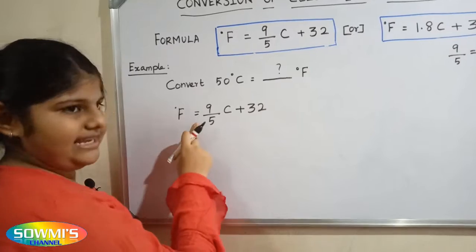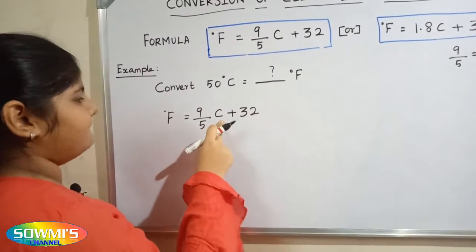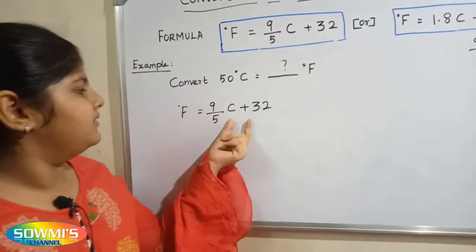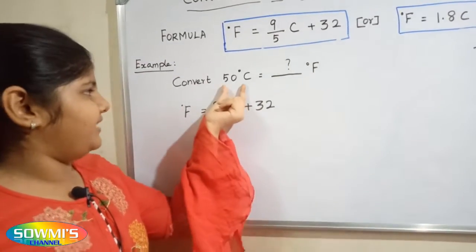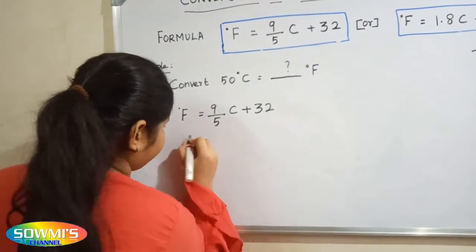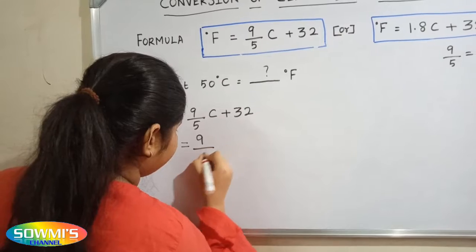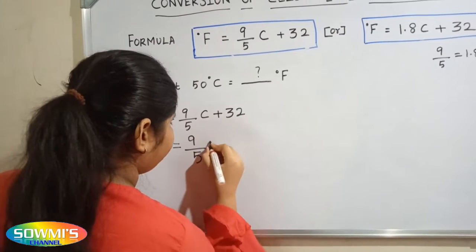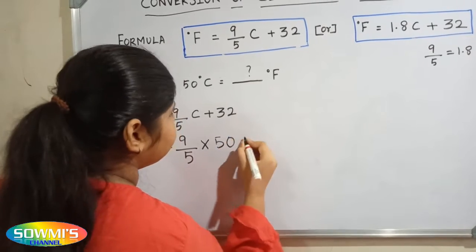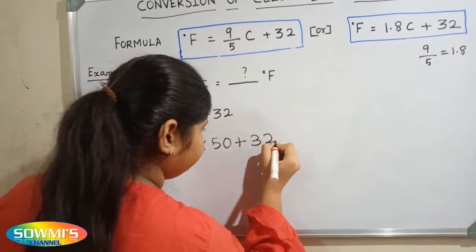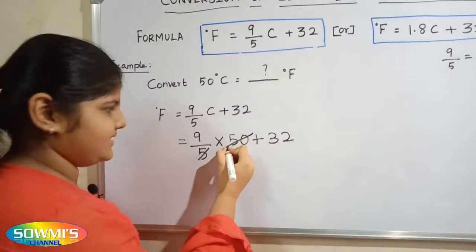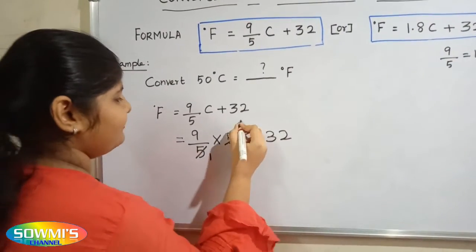Degree Fahrenheit is equal to 9 by 5 multiply Celsius plus 32. Now we will substitute 50 degree in the place of Celsius. So, 9 by 5 multiply 50 plus 32. Here 5 and 50 gets cancelled. 5 ones are 5, 5 tens are 50.